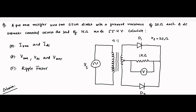Hello friends, here is another question on full wave rectifier circuit. The question says that a full wave rectifier uses two silicon diodes with a forward resistance of 20 ohm, and a DC voltmeter is connected across a load of 1 kilo ohm. The reading of the DC voltmeter is 55.4. It is not mentioned that it is a center tap full wave rectifier, and the circuit diagram was not given, so you have to draw it.